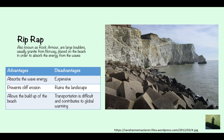Riprap, also known as rock armour, consists of large boulders — usually granite from Norway — which are placed on the beach to absorb the energy from the waves, as they can move a little bit and dissipate that energy. Advantages: absorbs wave energy, prevents cliff erosion, and allows the beach to build up as waves deposit sediment. Disadvantages: expensive, can ruin the landscape, transportation is difficult especially if coming from Norway, and it can contribute to global warming through transport emissions.